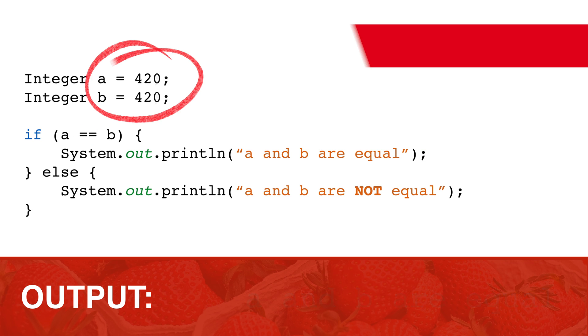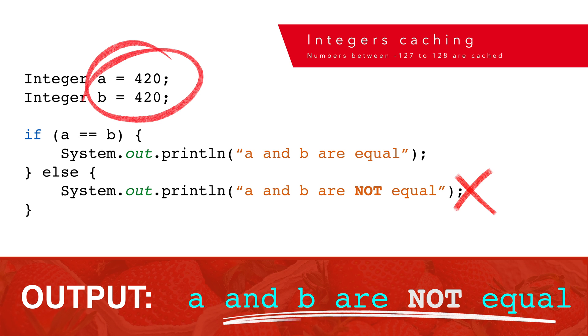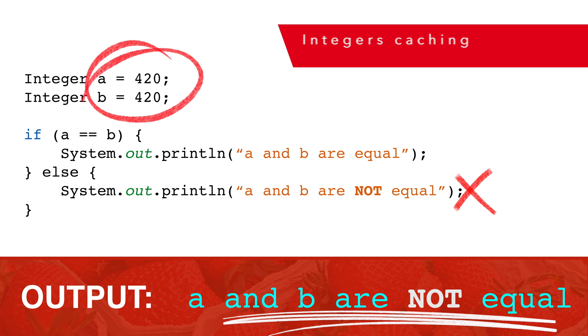And this fails for larger integers. Java just caches integer instances from minus 127 to 128. Lesson learned: the arithmetic operators are for comparing instances, not values.